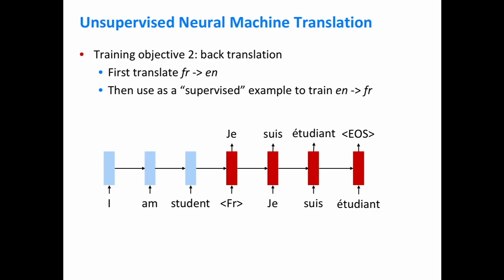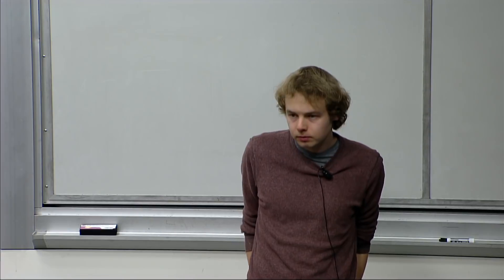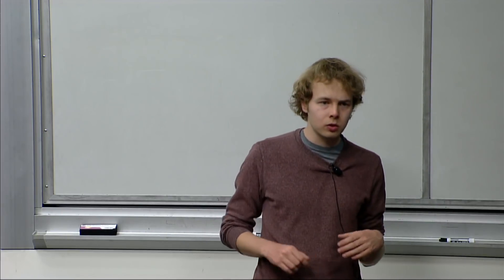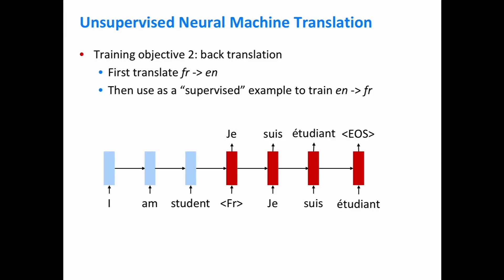Q: Why is the W matrix constrained to be orthogonal — is it to avoid overfitting? A: Essentially yes. It's making the assumption that embedding spaces are so similar that there's actually just a rotation that distinguishes word vectors in English versus Italian. There have been results that don't include the orthogonality constraint, and it slightly hurts performance to leave it out.